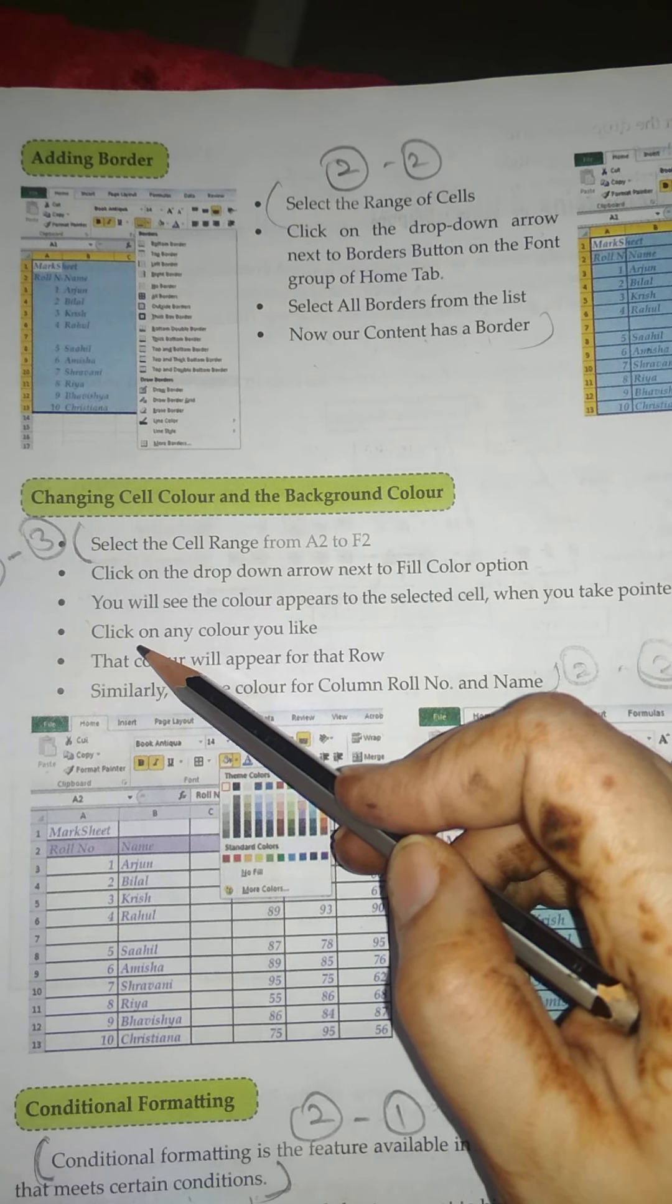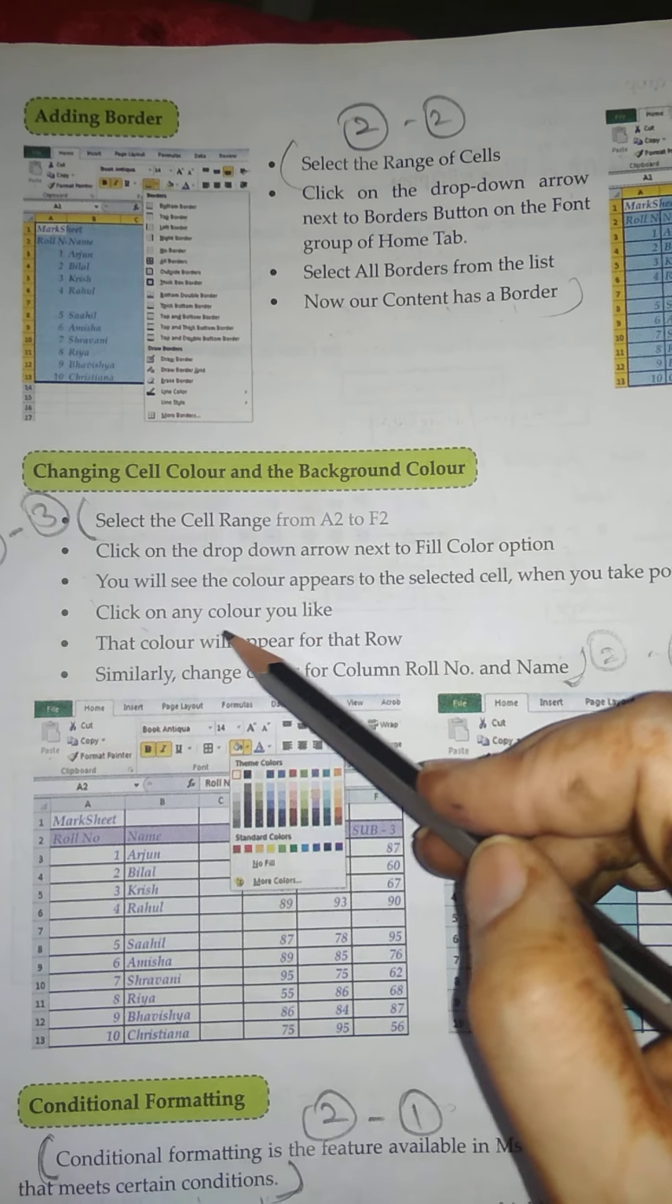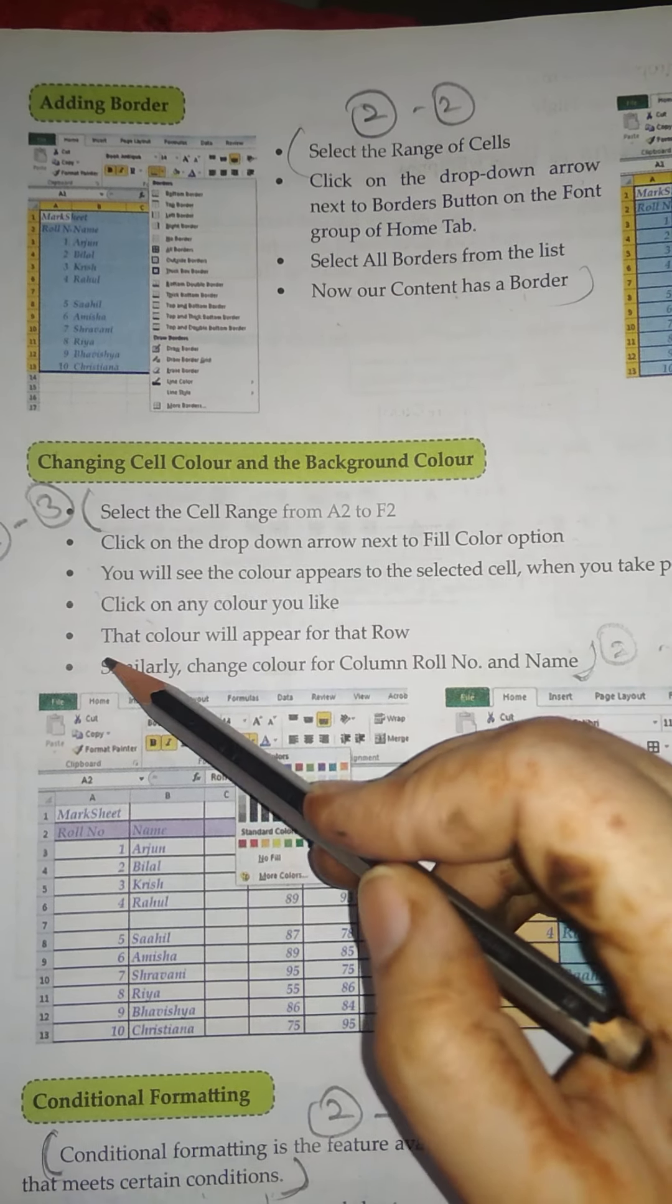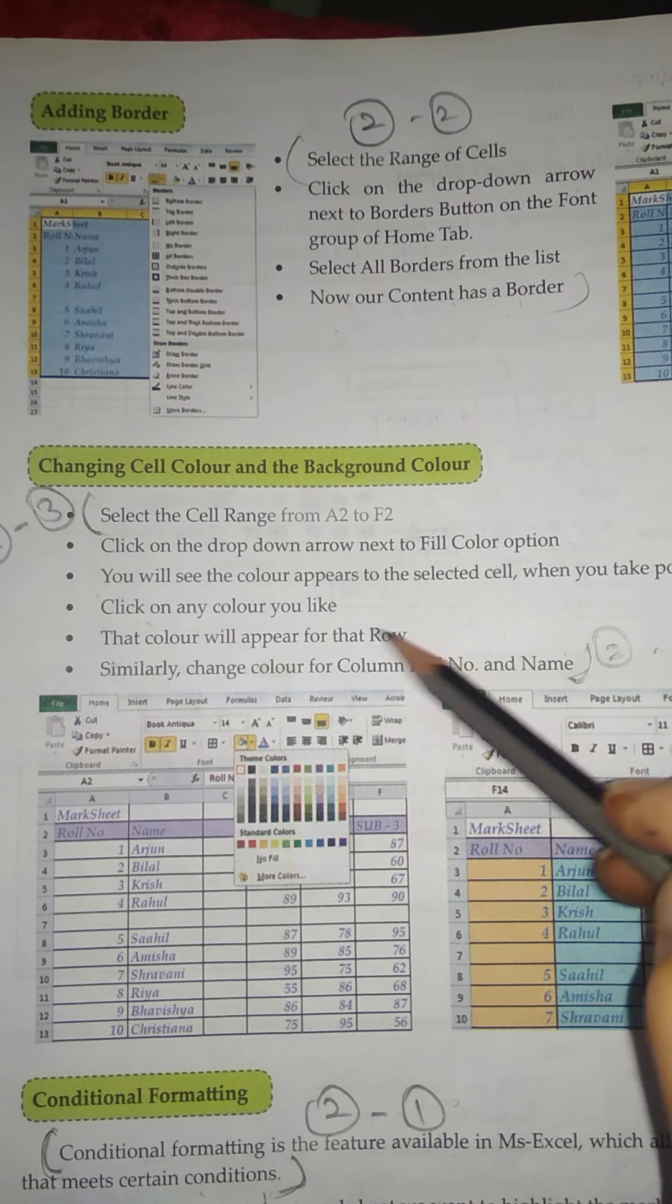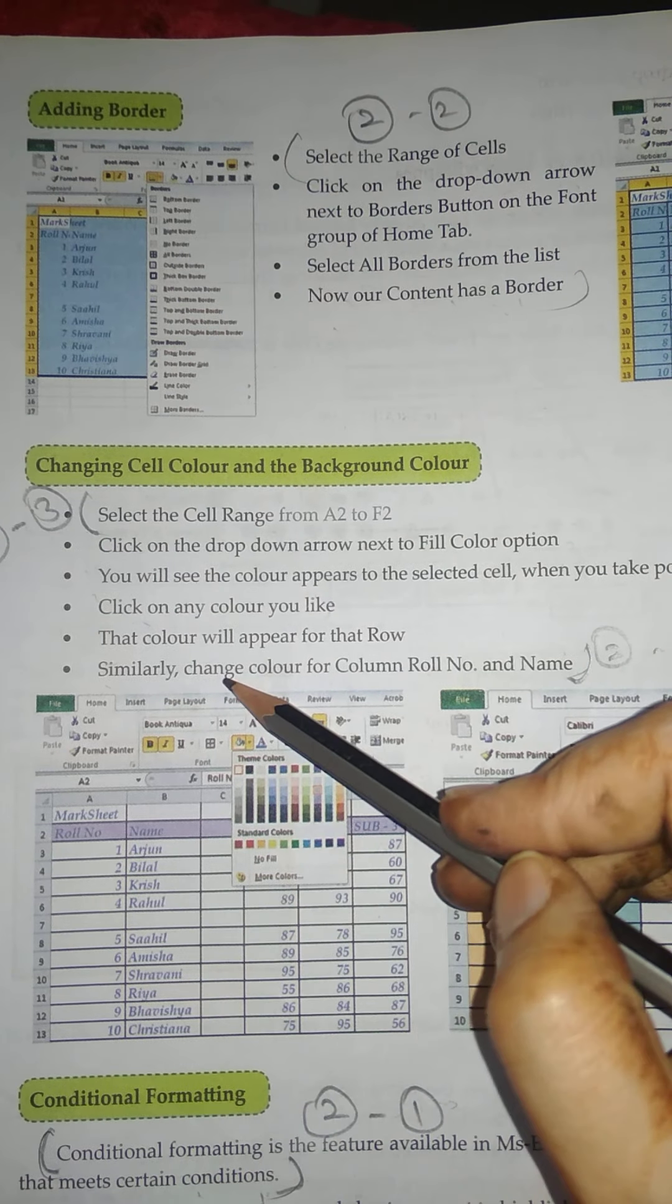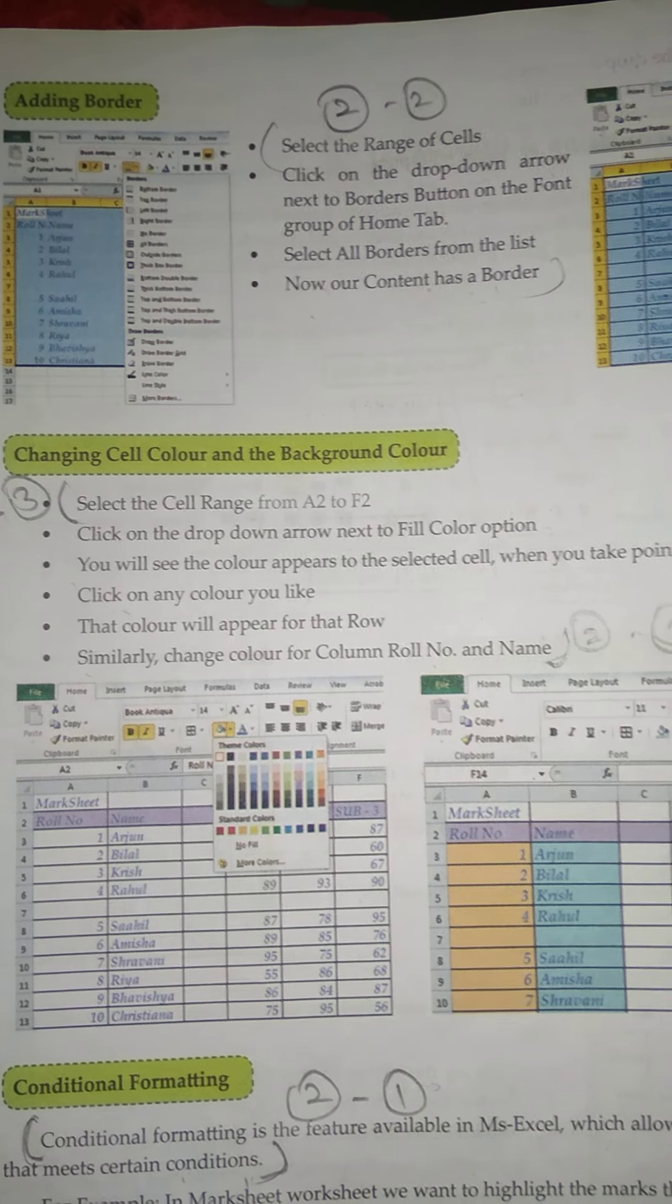Point number four: Click on any color you like. Point number five: That color will appear for the row. Point number six: Similarly, change color from column roll number and name.